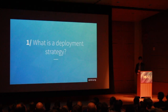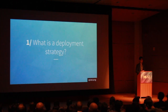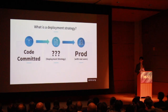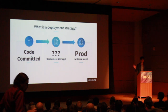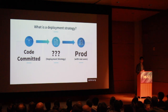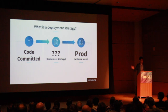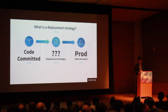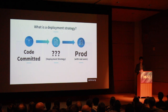First up: what is a deployment strategy? To get a shared understanding, in this talk we'll define it as what happens between when code gets submitted to master or a release branch — generally having your code in Git or SVN — and when real users in production are using your application. Not QA or product managers, but actual end users.